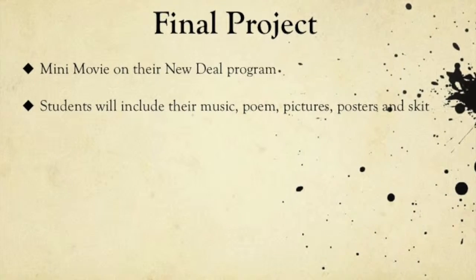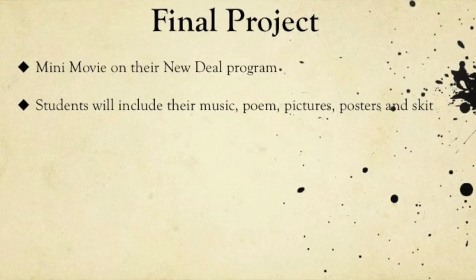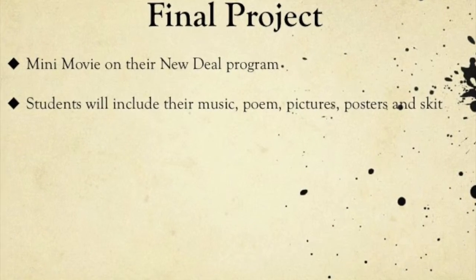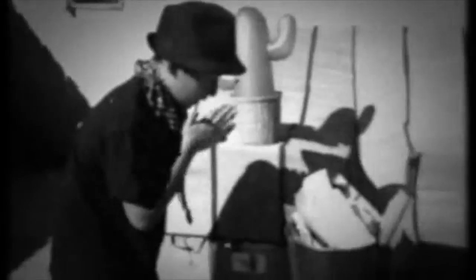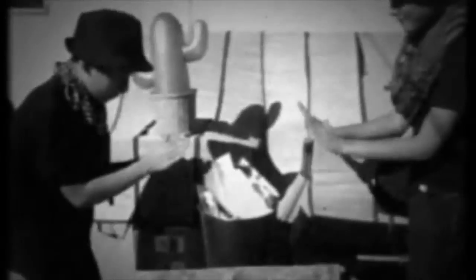Their final project will be a mini-movie on their New Deal program. Students will add all the projects they have been working on — for example, their poems, posters, music, and skits. Each person in the group will have a role in the mini-movie. They will use iMovie to create it. This is an example of what it might look like. Students can be as creative as they want, as long as they stay on topic.